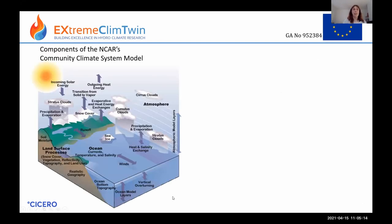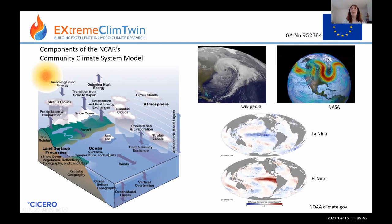This figure illustrates some of the processes included in a climate model — specifically the NCAR model, which is fairly typical. We have incoming solar energy, clouds, evaporation and heat exchanges, snow cover, precipitation, runoff, ocean currents, winds, vegetation, and orography. The climate model is expected to simulate things like extra-tropical cyclones, the jet stream, modes of variability like ENSO (which relates to sea surface temperatures in the Pacific), and thermohaline circulation.